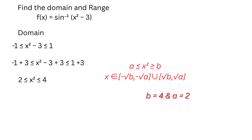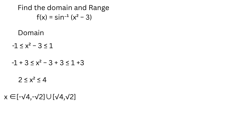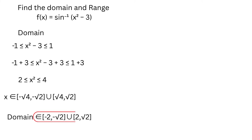Replacing b with 4 and a with 2, we get x belongs to [-√4, -√2] ∪ [√2, √4]. So x belongs to [-2, -√2] ∪ [√2, 2]. So we got the domain as this.